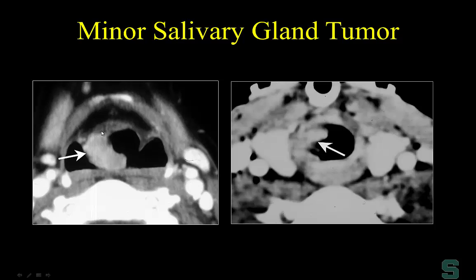Another common laryngeal tumor, beyond squamous cell carcinoma, is the minor salivary gland tumor — generally mucosal lesions, though they can be submucosal. The most common malignant varieties are mucoepidermoid carcinoma and adenoid cystic carcinoma. This is an example of a malignant minor salivary gland tumor — in this case, adenoid cystic carcinoma — though unfortunately the radiological appearance is very similar to squamous cell carcinoma. Statistically, a mucosal malignancy is squamous cell carcinoma until proven otherwise.